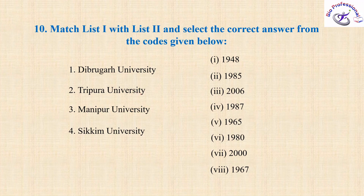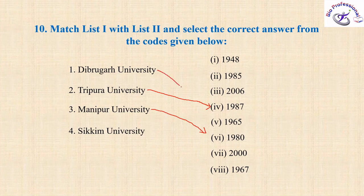The last question is about year of establishment of universities. Tripura University was established in 1987, Manipur University in 1980, Dibrugarh University in 1965, and Sikkim University in 2006. The newest year of establishment is 2006, which is Sikkim University.